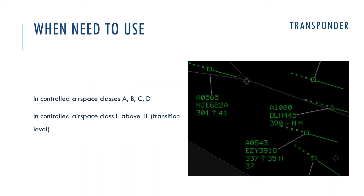Obviously, we need to use the transponder in controlled airspaces where we need to separate traffic. However, it is possible to fly without a transponder in class E below transition level. Please check your rules in your own country about using the transponder, as there could be some exclusions or differences between rules in each country.